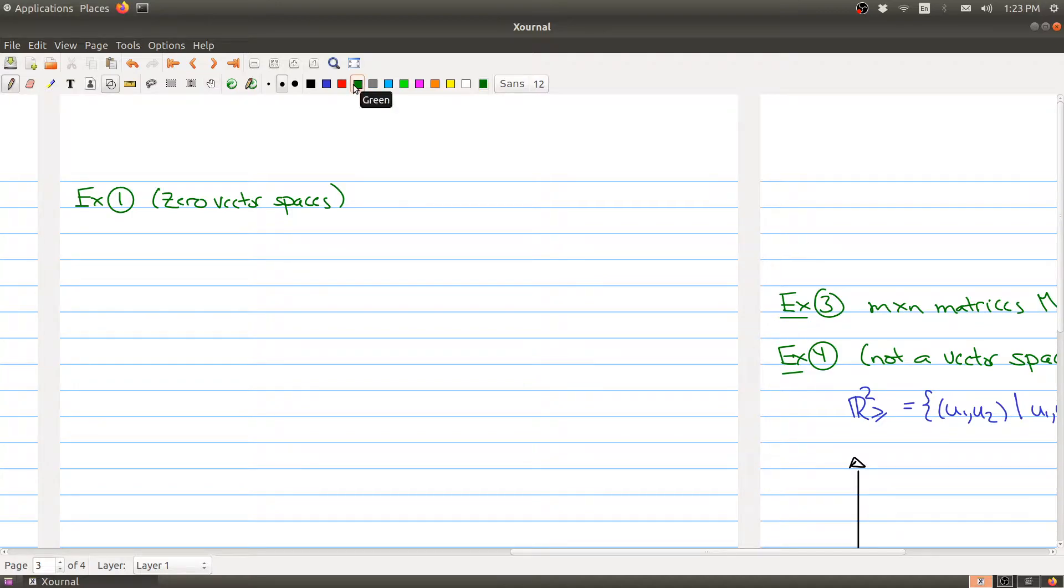So the first one is in some sense the simplest vector space. Here we're going to take V to be a set containing only one element—it only contains the zero vector.